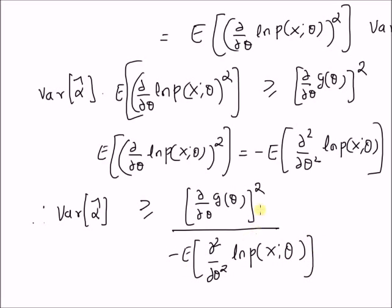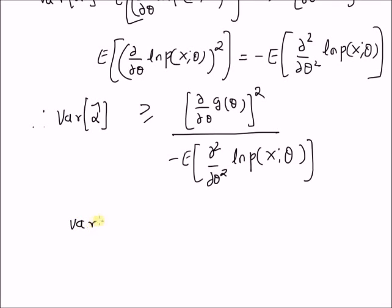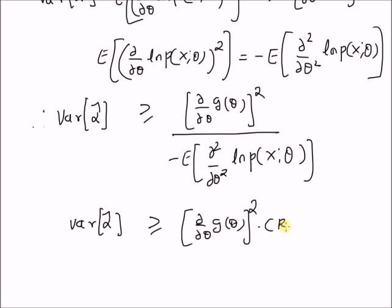Therefore, the variance of alpha-hat is bounded by the square of the derivative of G(theta) divided by the Fisher information — in other words, the variance of alpha-hat is bounded by [G'(theta)]² times the CRB of the parameter theta-hat. When you have a function of the original parameter theta, its CRB is the square of the derivative of G multiplied by the original CRB. Thanks for watching.